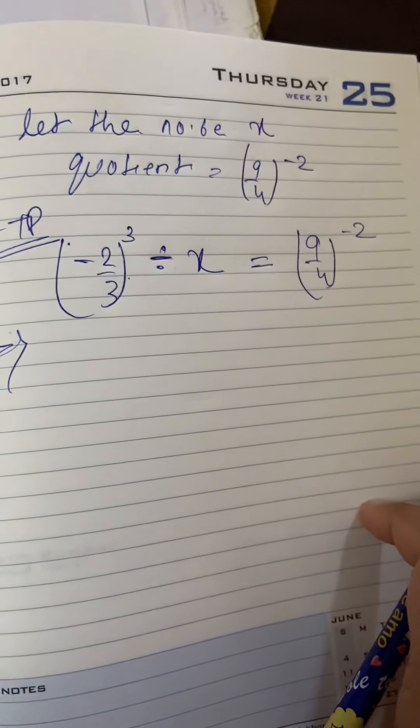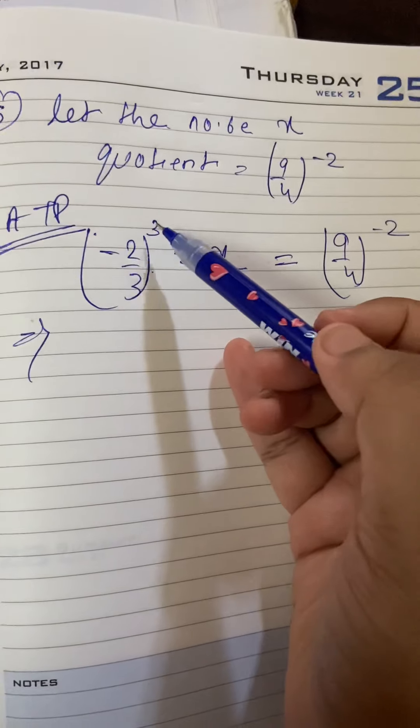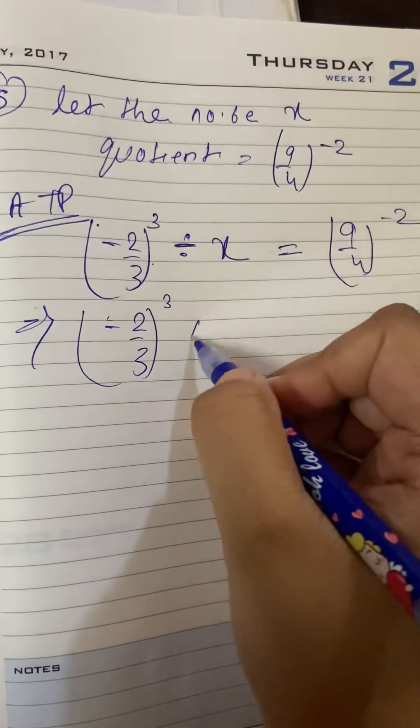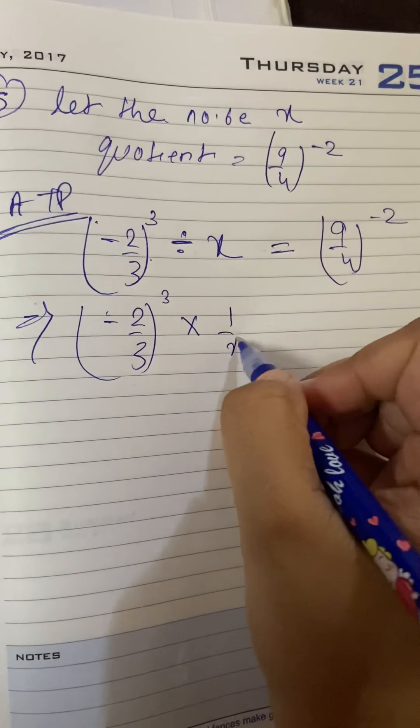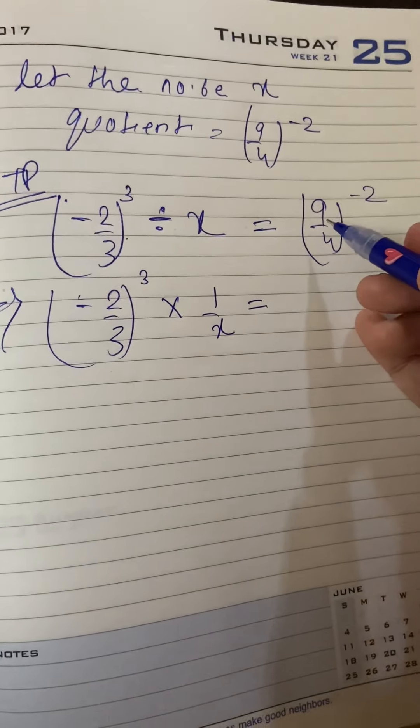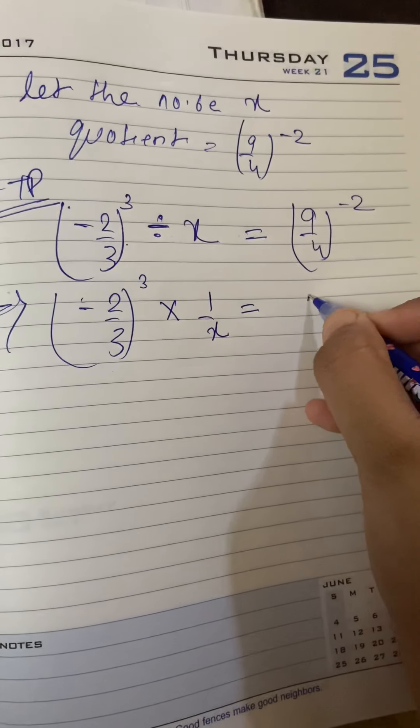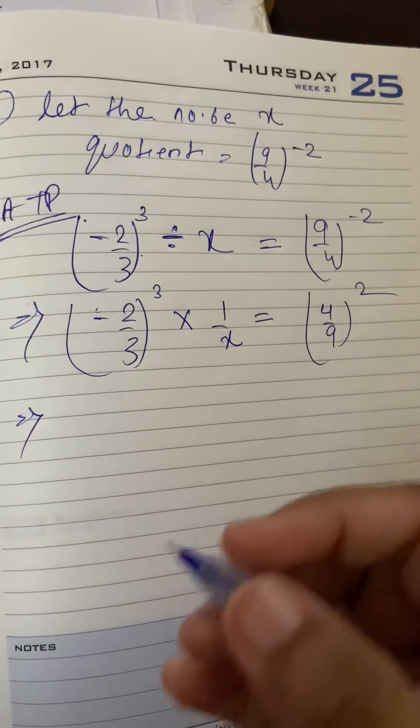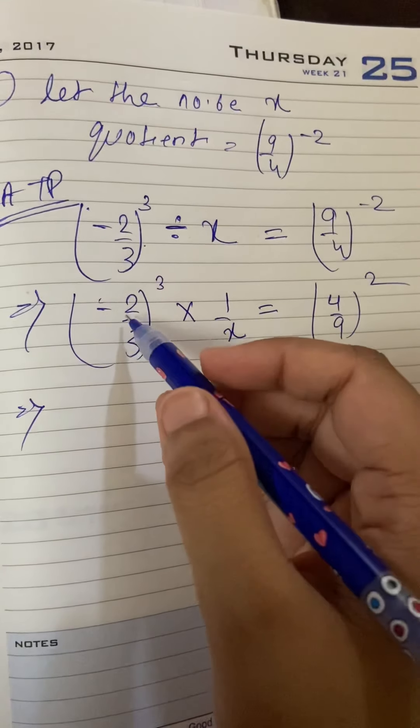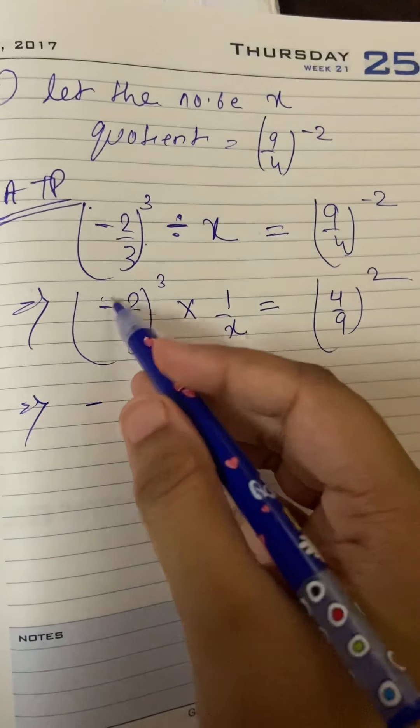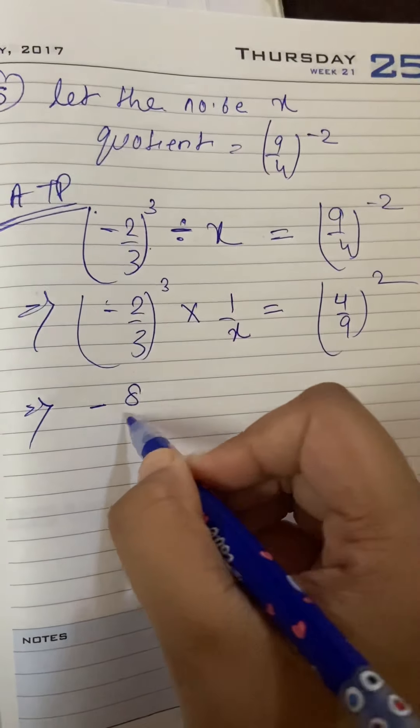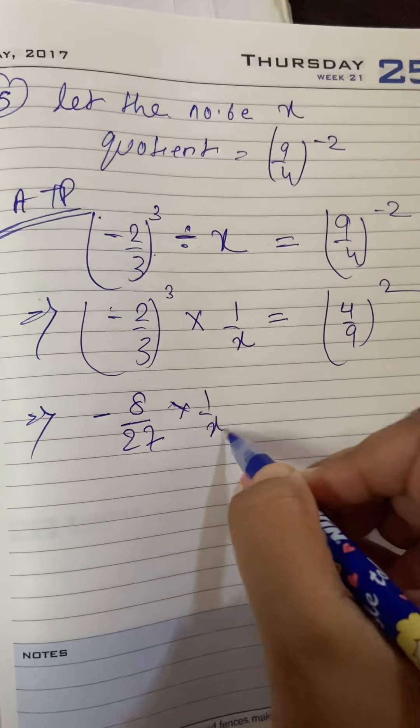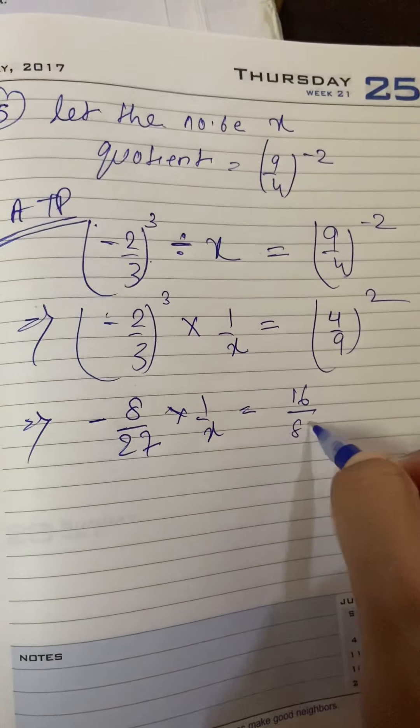To, abh iska division kiasi karenghe? Sibse pahre to yeh dhekna hai ki ya minus sign naihi hai. To, isko aise hi likha hai hai. Division ke badle into, x ke badle 1 by x. Yhe haa par minus sign hai hai. To, isko hattate hai hai. 4 by 9 ka square. Ab kya karna hooga? Bracket open karna hooga. To, minus ke liye to cube me minus rhega. 2 ka cube 8 by 3 ka cube 27. Into 1 by x. 4 ka square 16, 9 ka square 81.